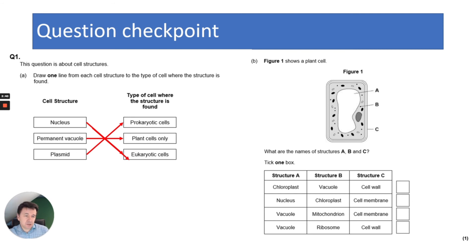The second question shows a plant cell and asks what are the names of structures A, B, and C. This type of question is confusing because you've got to get all three structures correct to get the answer. Structure A is a vacuole, structure B is ribosomes (usually the smallest part of a cell), and therefore C is a cell wall. So it can only be vacuole, ribosome, and cell wall.